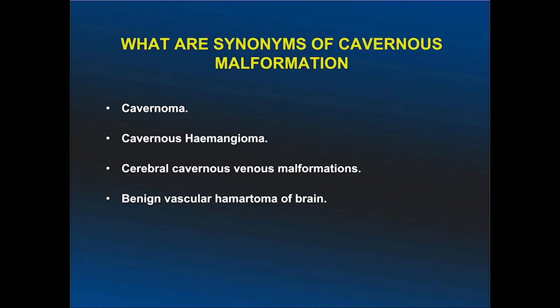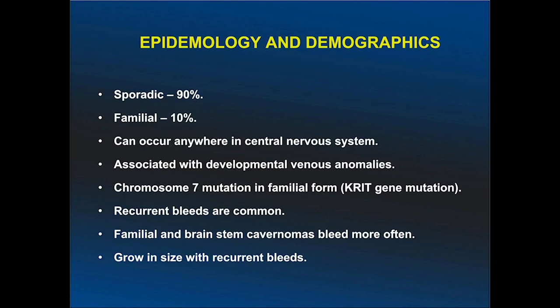Cavernous angiomas can also be called cavernous hemangiomas or cerebral cavernous venous malformations. Epidemiologically, 90% occur as sporadic cases and 10% are familial. Familial cases occur due to CCM gene mutation. Familial and brain stem cavernomas bleed more often than sporadic ones.